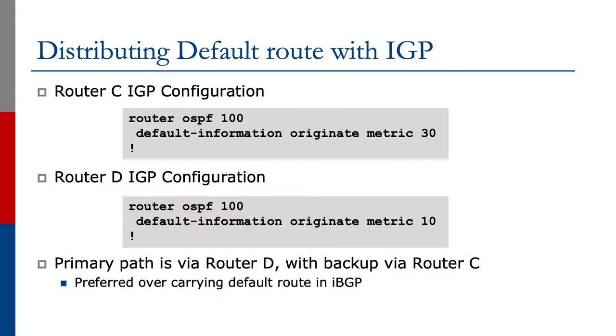Just a note before we conclude the multi-homing examples. If we're distributing the default route within the AS — whether we hear the default route by BGP, getting the full routing table, or simply in the partial routing example — we should distribute the default route using our chosen IGP, whether that is OSPF or ISIS.